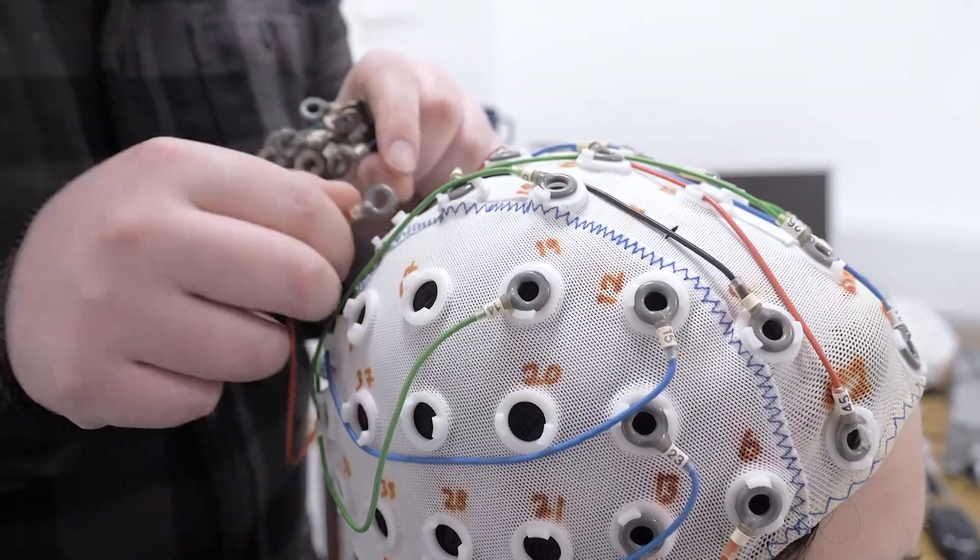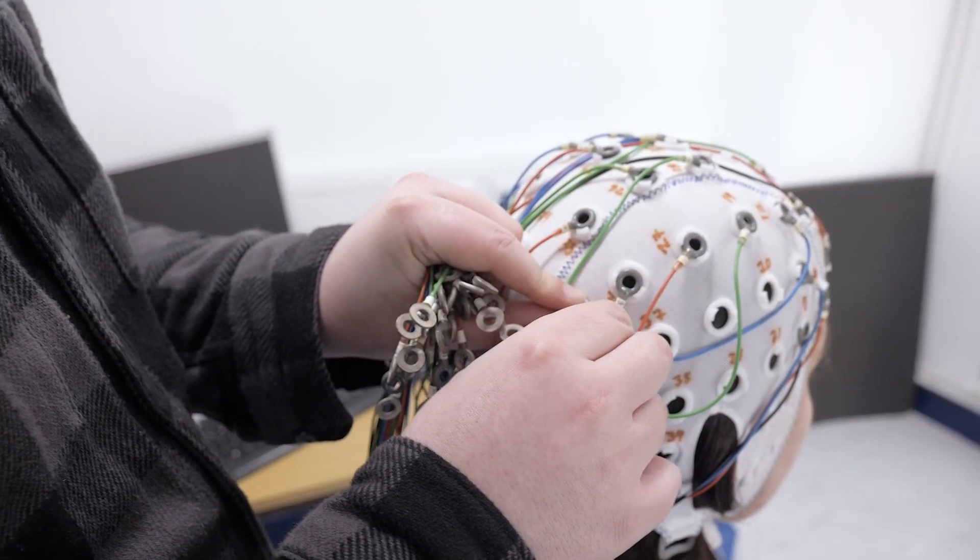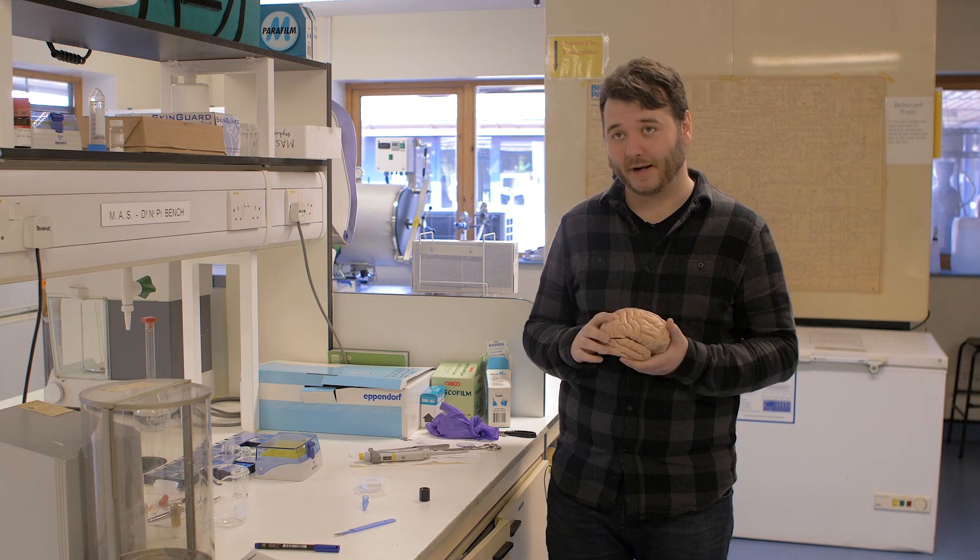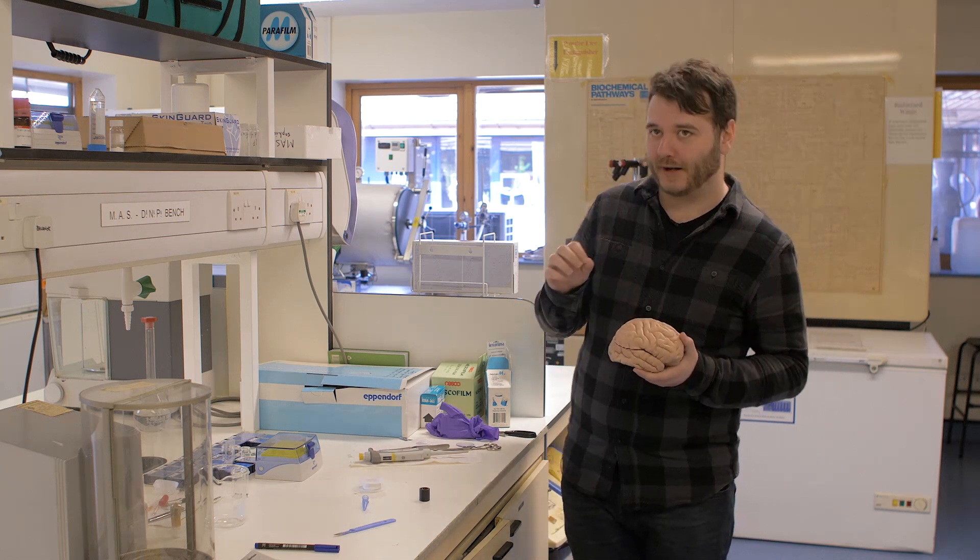Another option is to put electrodes on the scalp. You just place them on there and measure the electrical potential on the scalp as an electrical current passes somewhere in the brain. But there's also a third way, and this is the way we're interested in.